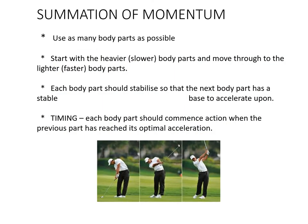Some keys to summation of momentum: use as many body parts as possible — make sure you use your legs. Heavier, slower body parts almost always start with the legs, moving through to smaller ones like the wrist or ankle. You need a platform from the preceding body part so the next can accelerate off it, all beautifully timed. For golf: legs, then hips and torso, then shoulders, forearms, finishing with the wrist.